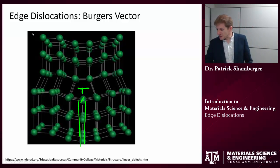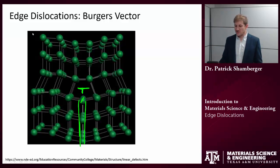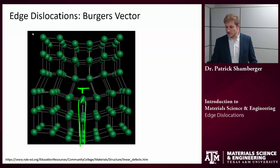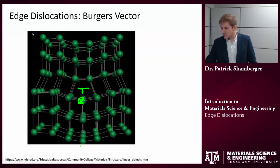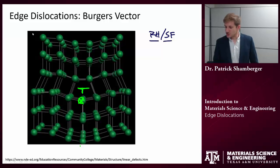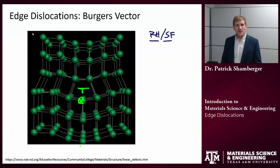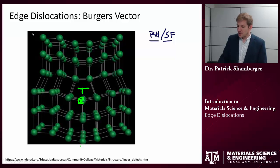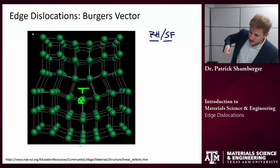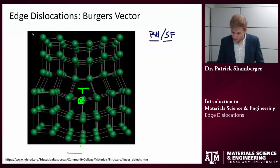Let's draw the Burgers vector, but first, in order to get the sign of the Burgers vector properly, I need to indicate some sort of sense to the dislocation itself. So I'm going to create a sense vector. This is a symbol for a vector that's going into the plane. And that's important because we use the right-hand rule to define the sign of the Burgers vector. We're going to use the right-hand start-to-finish convention. It's not as important which convention you use — different people use different conventions — but you need to be consistent. This is especially important when you start to have different defects interacting with each other. So if I apply the right-hand rule and I use this sense vector, then my thumb is pointing into the plane, and I'm basically going to proceed in a circuit this way.